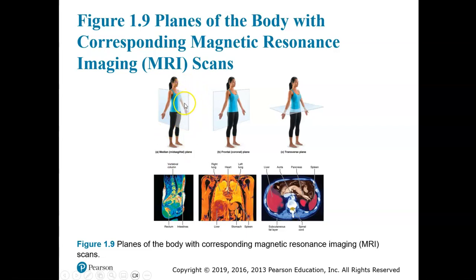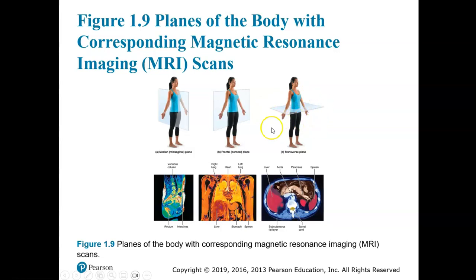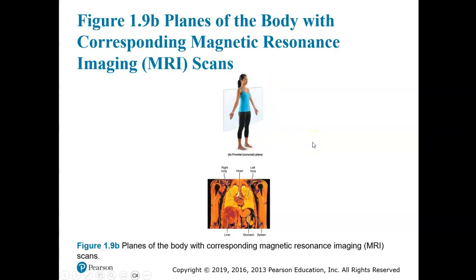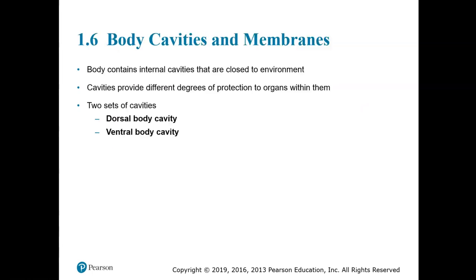Notice how the planes divide the body into sections. In picture A, you see a median or mid-sagittal plane or section. Frontal or coronal is shown in picture B — notice how a frontal section divides the body into front and back or anterior and posterior portions. And then a transverse section is a cross section.